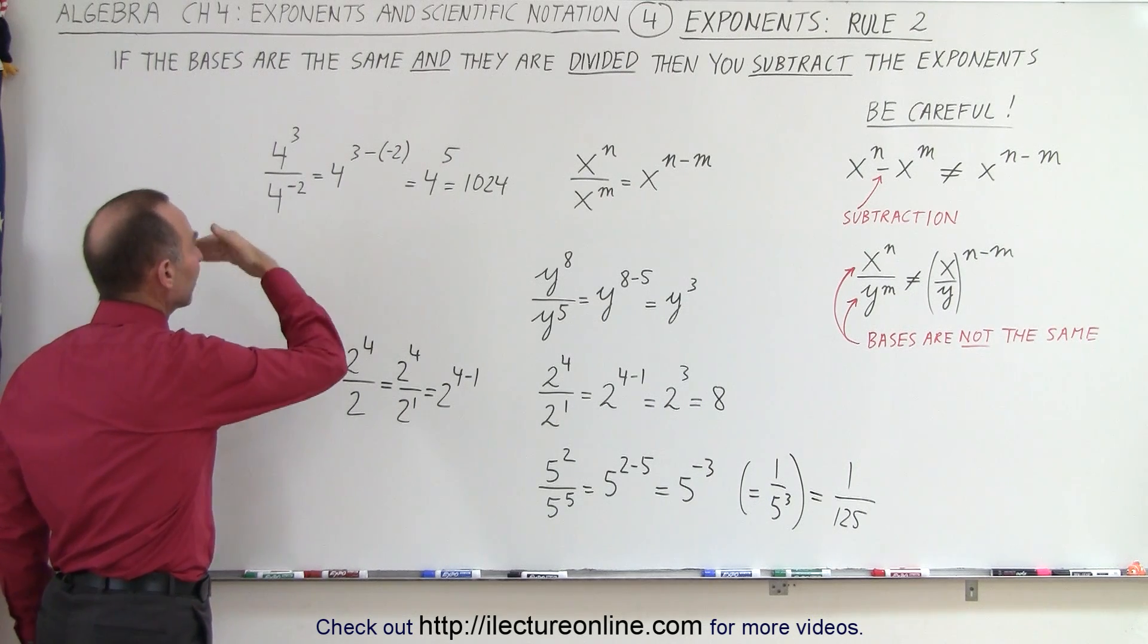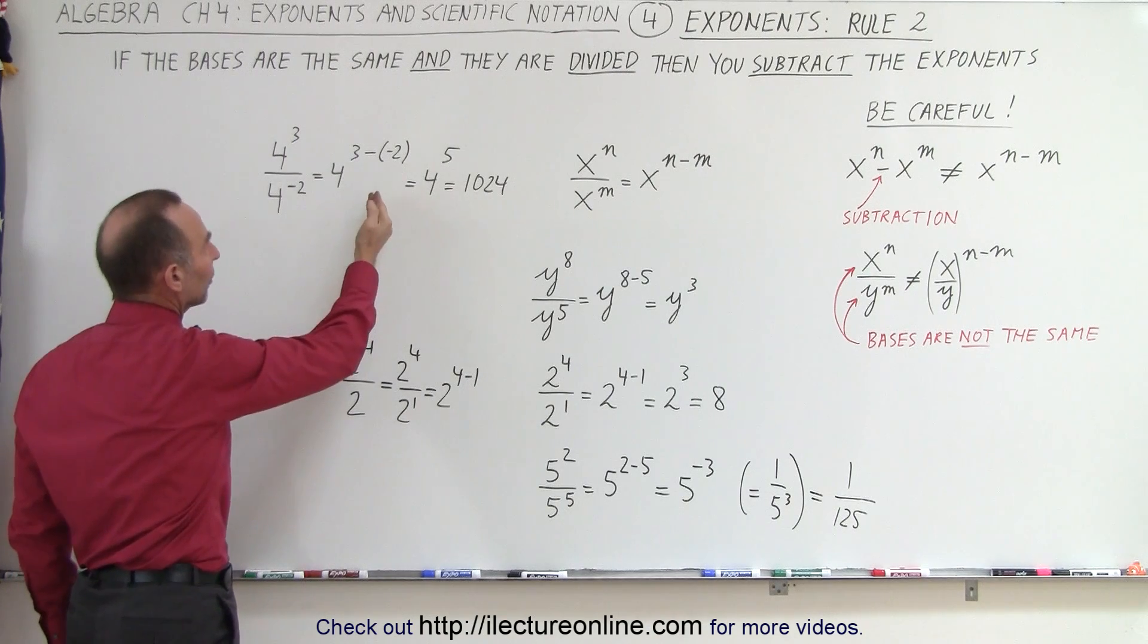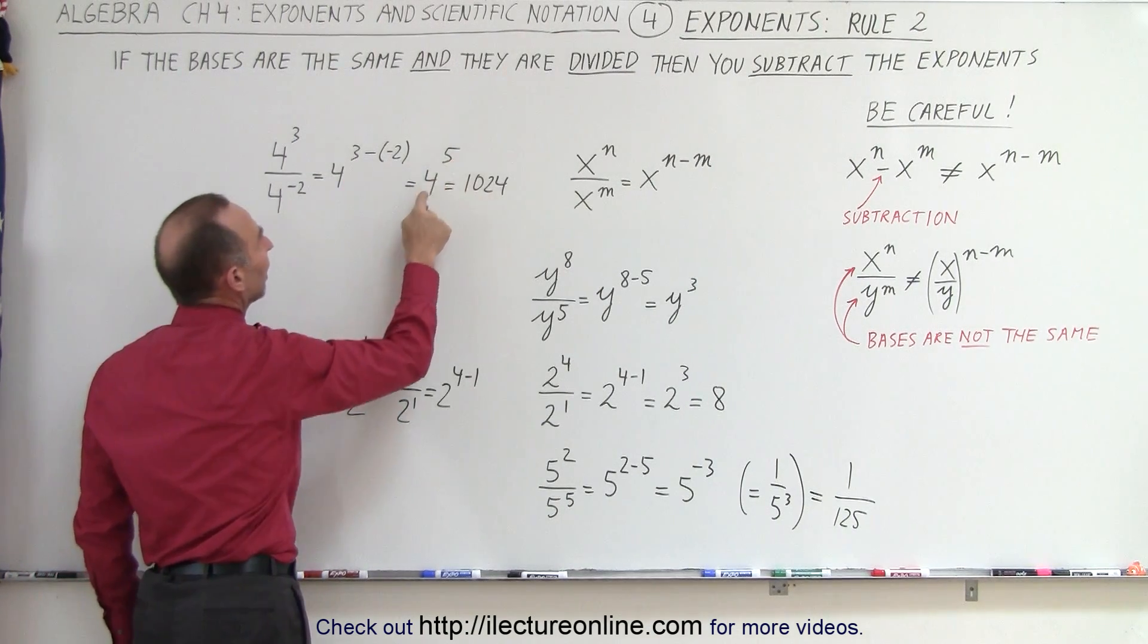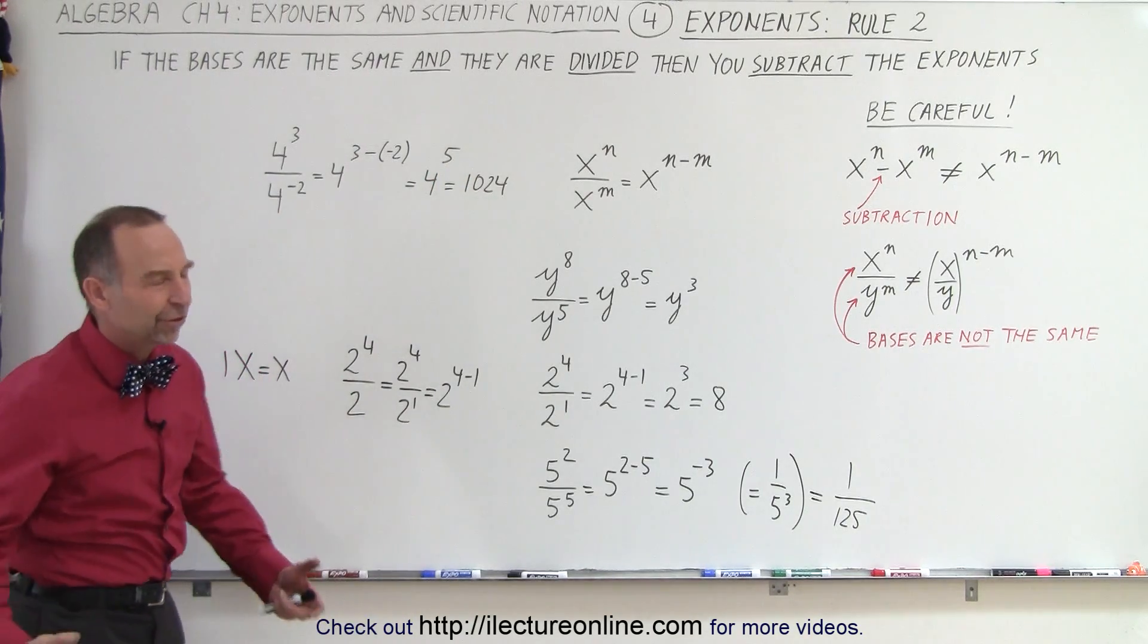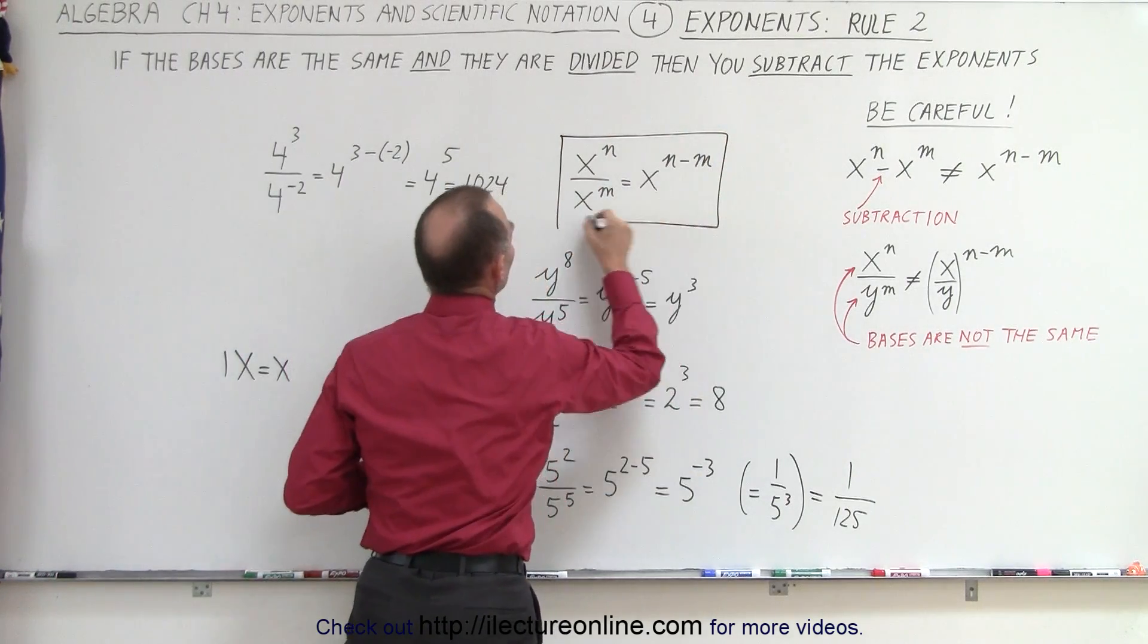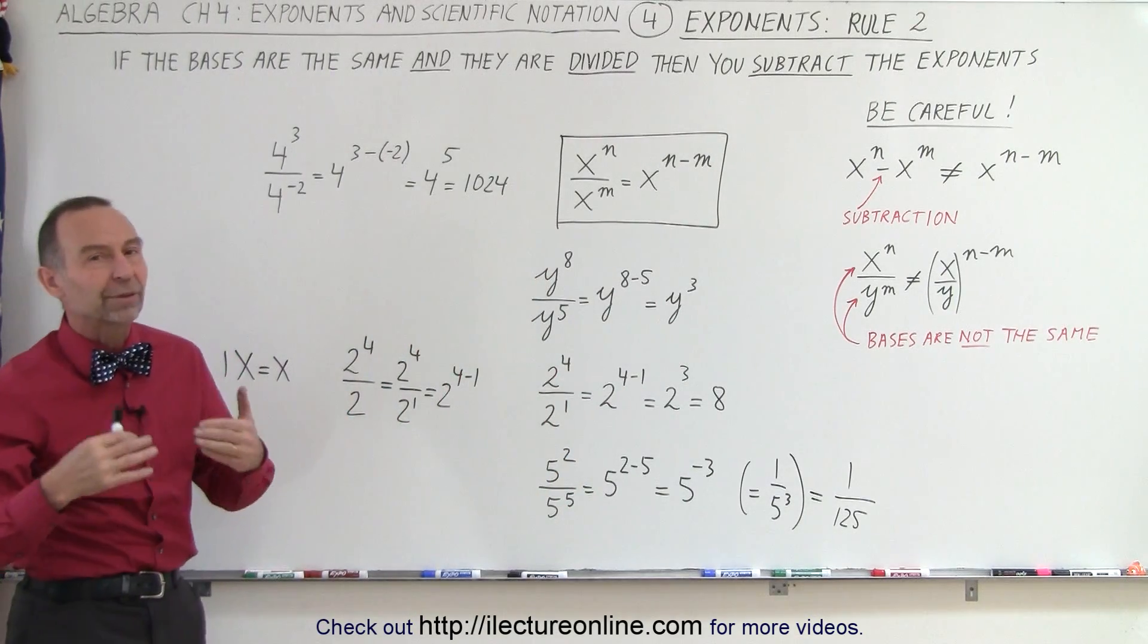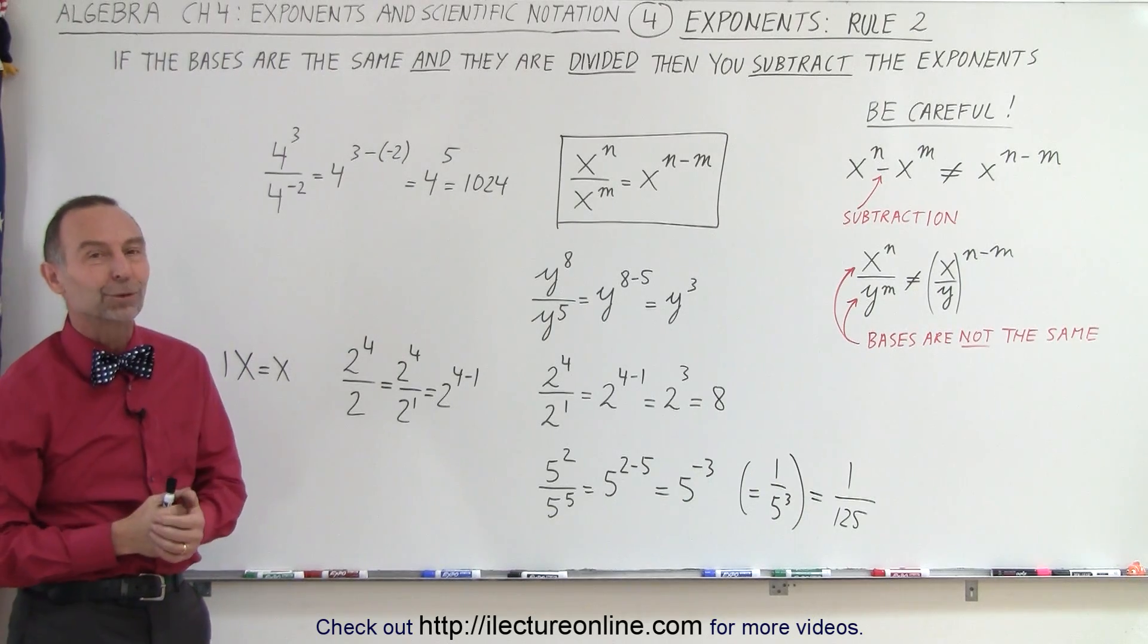Then you don't care, you do the rule exactly the same. You subtract the negative number, which is the same as adding the number. And so we get 3 minus negative 2 is 5, and 4 to the 5th power is 1024. So those are all the various types of things you can run into when you apply this straightforward rule right here. When you divide two numbers, the bases are the same, they both have exponents, then you get to subtract the exponents. And that is rule number 2.